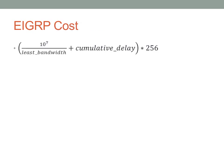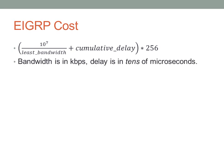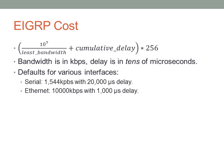EIGRP cost is a little more complex than OSPF. You don't need to know the full equation for the CCNA, but EIGRP cost is determined by a least bandwidth component — the lowest bandwidth over the entire path — and cumulative delay, which adds the delay on each link. Bandwidth is measured in kbps, and cumulative delay is measured in tens of microseconds. Some default values are shown here, and you can calculate associated costs from those numbers.